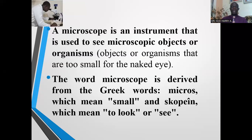What is a microscope? A microscope is an instrument that is used to see microscopic objects or organisms. Microscopic organisms are organisms that we cannot see with our naked eyes, such as bacteria and some microscopic fungi, the protozoans like amoeba, paramecium, chlamydomonas, and many others. Those organisms we cannot see with our naked eyes are said to be microscopic organisms, and the instrument used to see them is called a microscope.